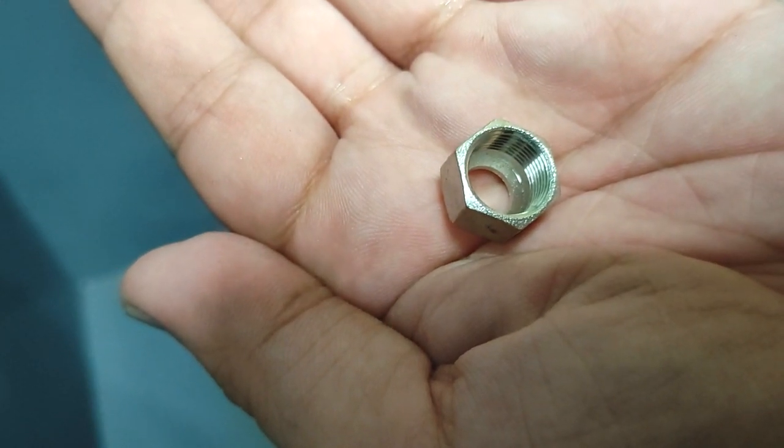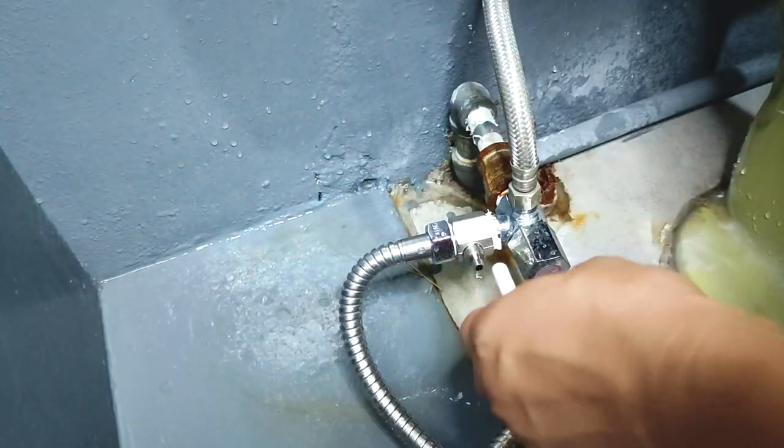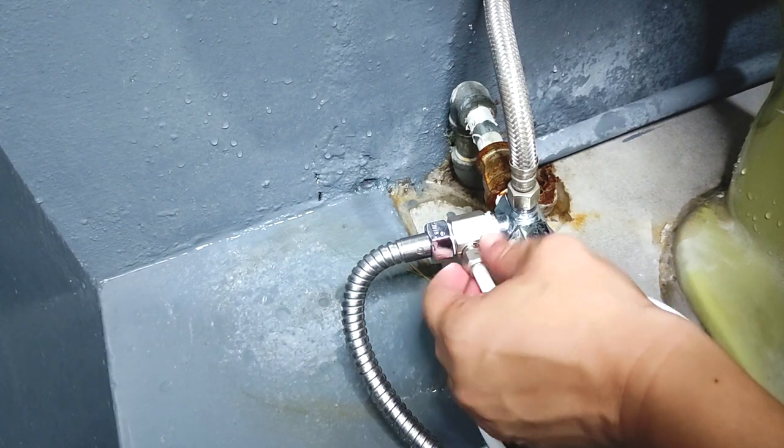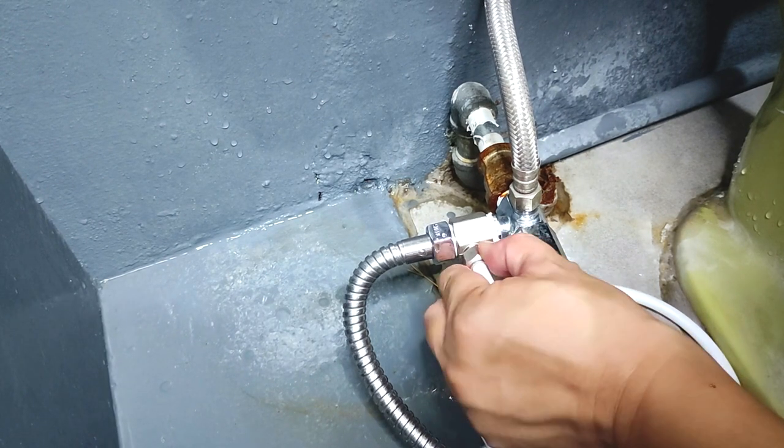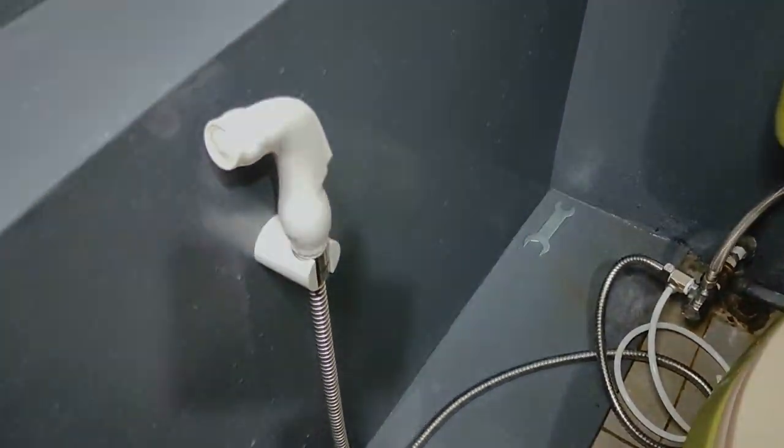Now we take this locking nut I removed from the adapter earlier and slide it onto the plastic tube. I twist the tube on the adapter spout and secure it in place by screwing in the locking nut. So that section is ready and we'll come back to it later.